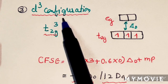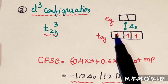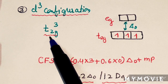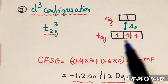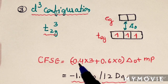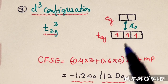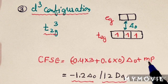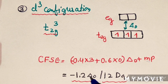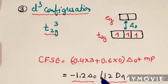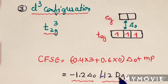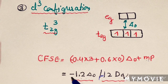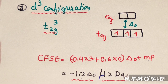For D3 configuration, three electrons go into T2G, giving configuration T2G3. No electrons in EG, no paired electrons. So CFSE = 3 × (−0.4) × delta O = −1.2 delta O or −12 DQ.